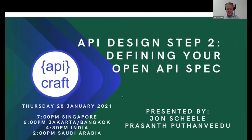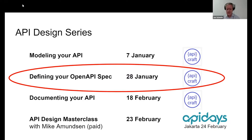Welcome everyone to defining your OpenAPI spec. We started this series on the 7th of January with modeling your API, and you can see the recording from that presentation at apicraft.co. Today we're going to follow modeling with defining your API using the OpenAPI specification. The final meetup in the series is about documenting your API. As part of API Days Jakarta, we're putting on an API design masterclass with the author Mike Amundsen. I'll have more detail about that in a moment.